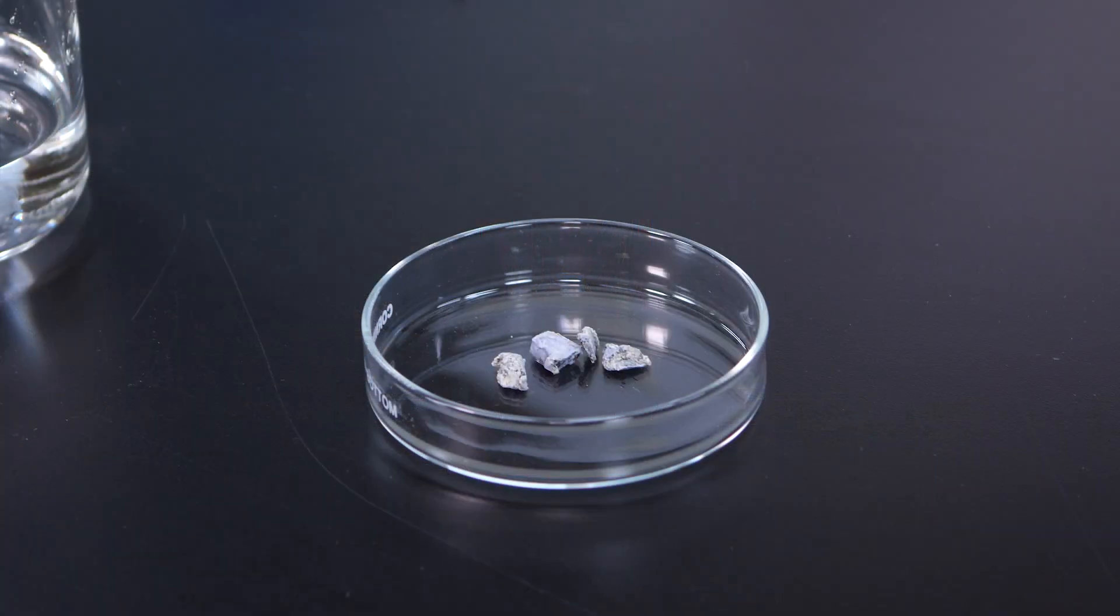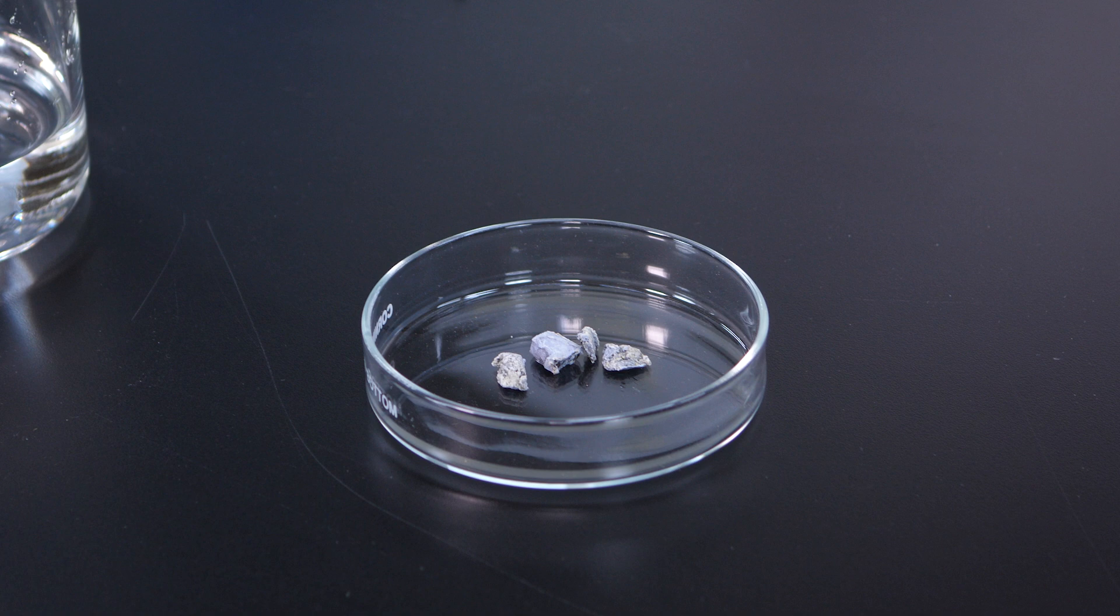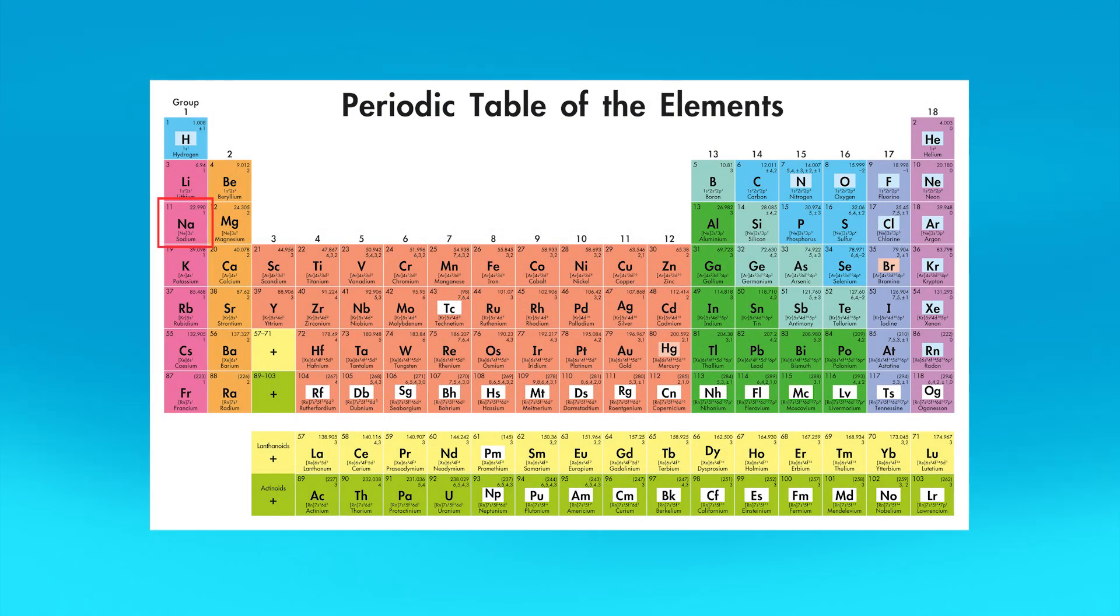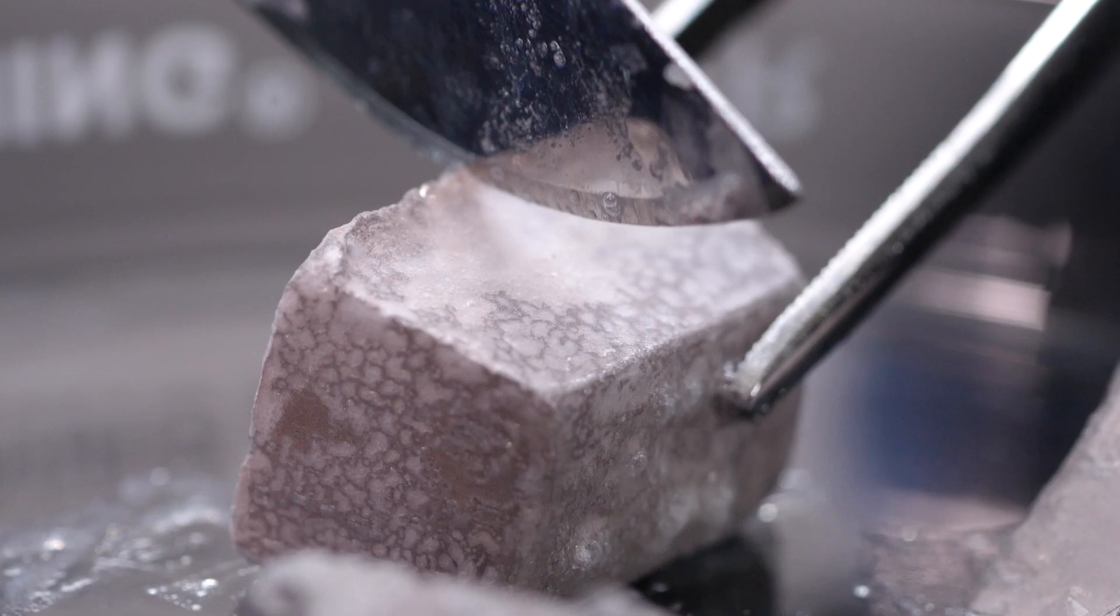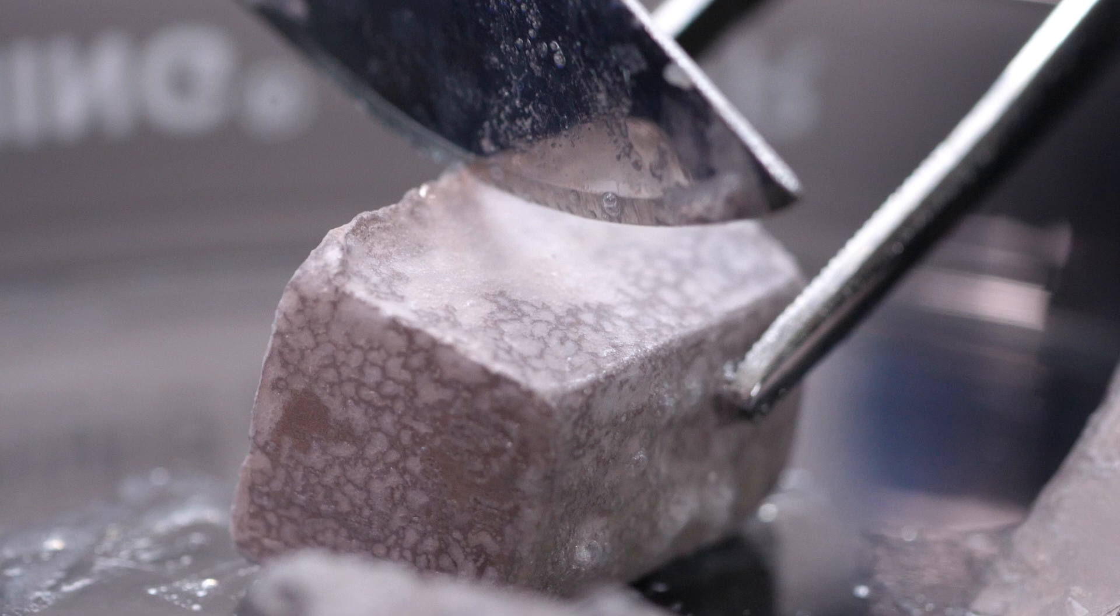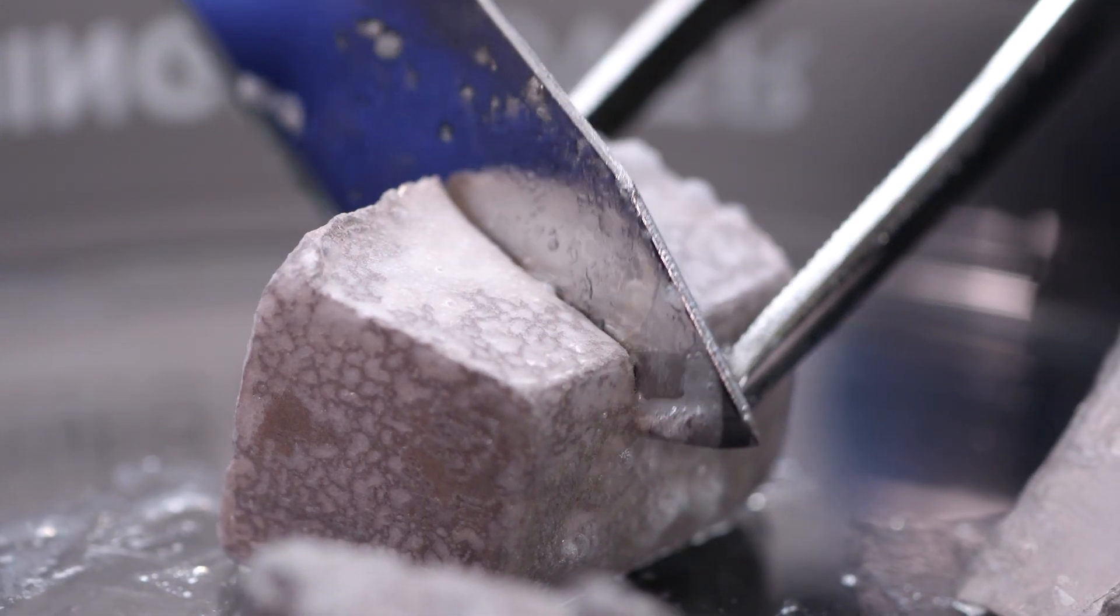The first reactant for the synthesis of sodium chloride is sodium. Sodium is an alkali metal, one of the chemically reactive metals located in group 1 on the periodic table. Although sodium is a metal, it is so soft we can cut it with a knife.